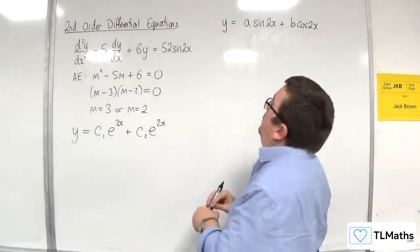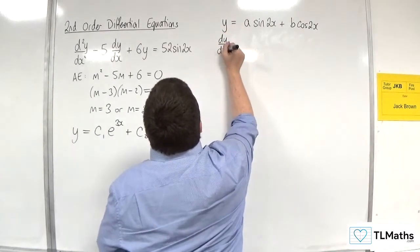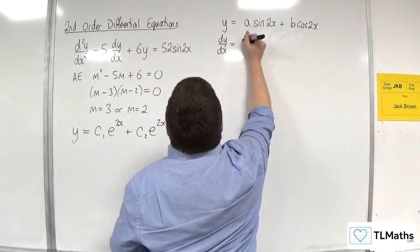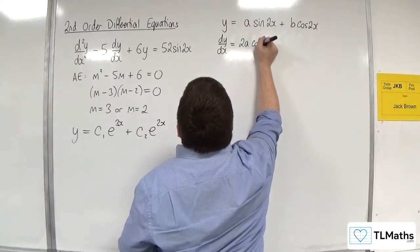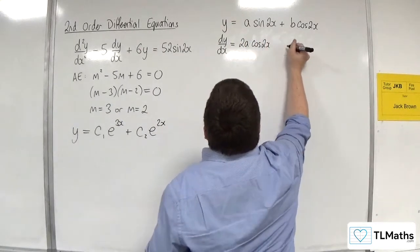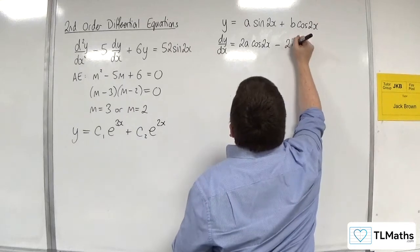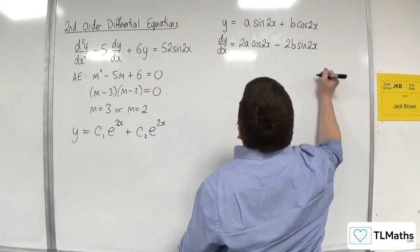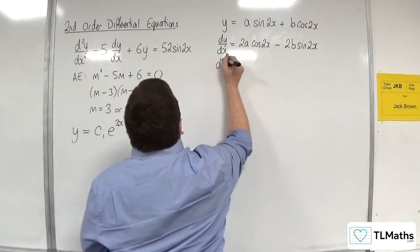So, we're going to differentiate this. So, we're going to get dy by dx is equal to 2a cosine of 2x. And here we'll have minus 2b sine of 2x. We need to differentiate again.